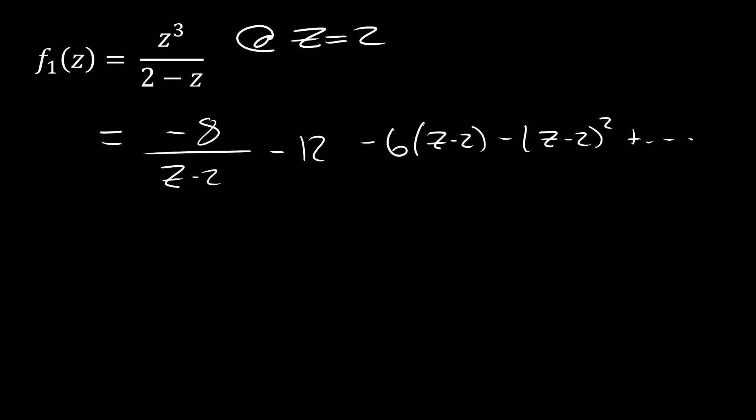With the Laurent series, we know that we can have negative and positive powers of z. And we very clearly have 1 right here. This type of function, or this type of function with this type of singularity, is what we call a pole. We call this a pole because there's only one term in our Laurent series that has a negative power of z.